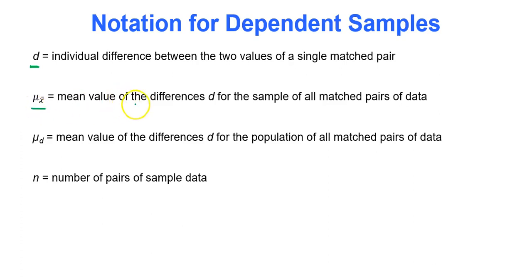μ sub d̄ is the mean value of the differences d for the sample of all matched pairs of data. μ sub d is the mean value of the differences d for the population of all matched pairs of data. μ sub d̄ is from our sample data, and μ sub d is the mean value of the differences for the population. That's what we'll actually be running our hypothesis test about. And n is the number of pairs of sample data.